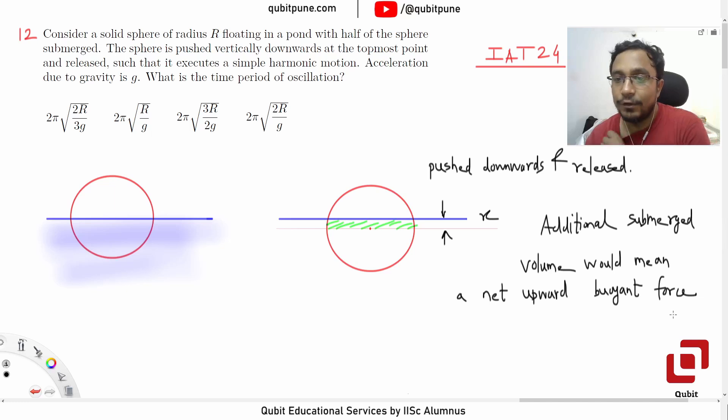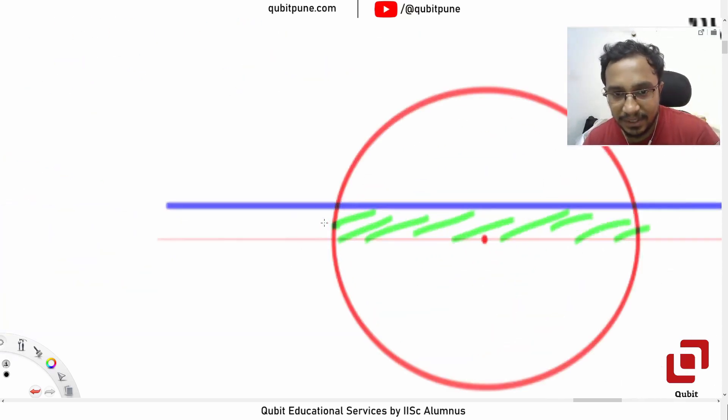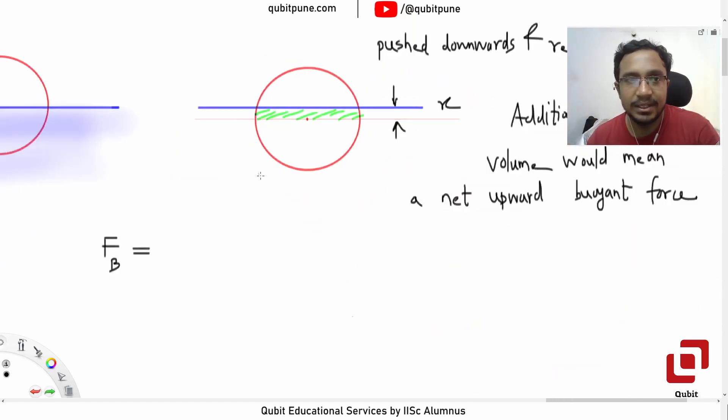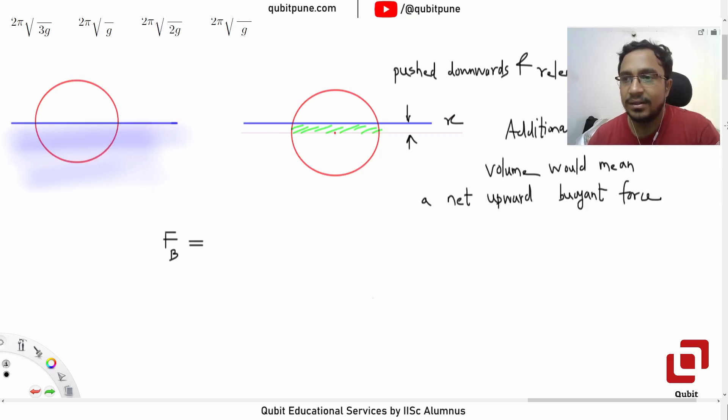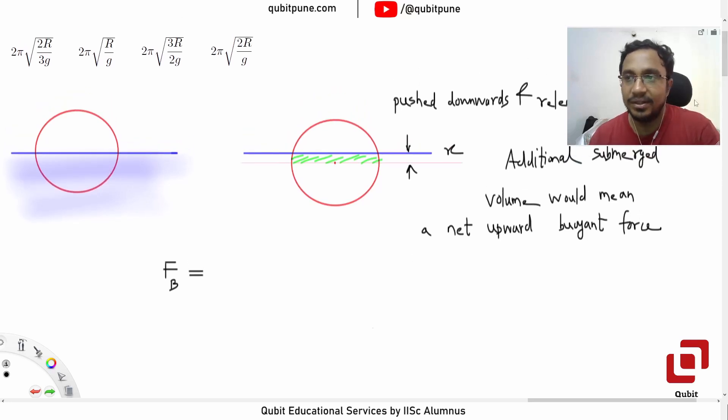If this displacement is x, the additional submerged volume would mean a net upward force because the weight is already balanced. Now see, we are going to assume that the submerged part above the hemisphere is like a disc.